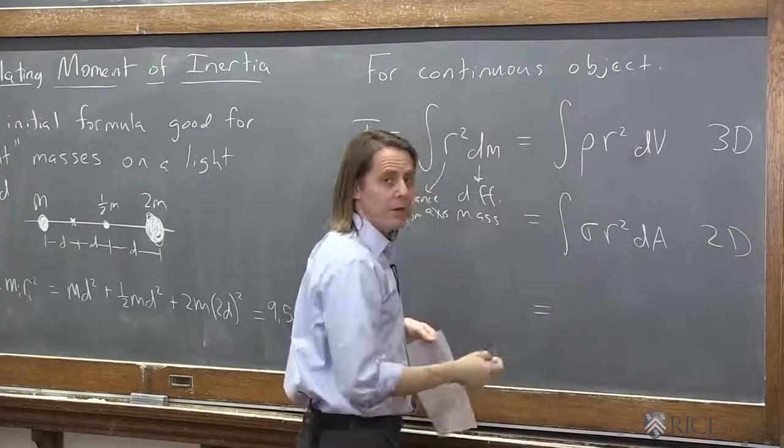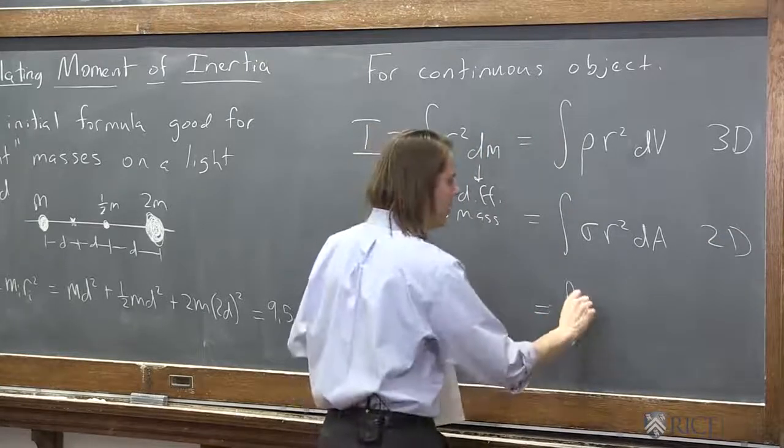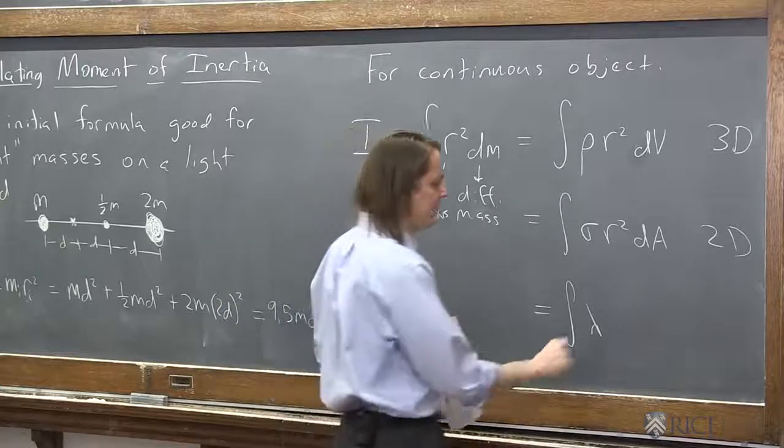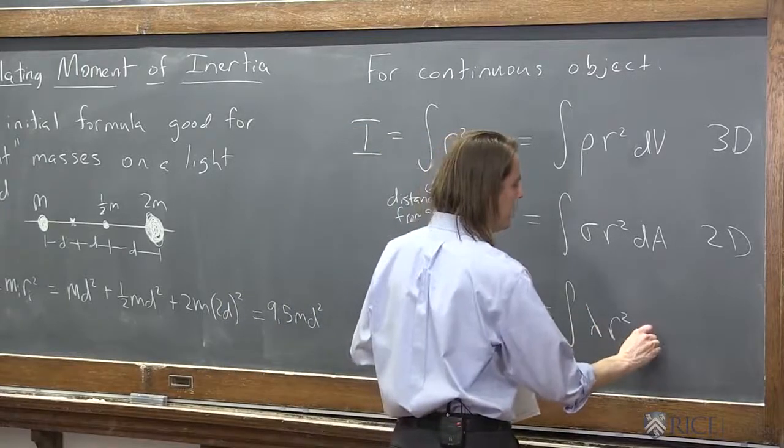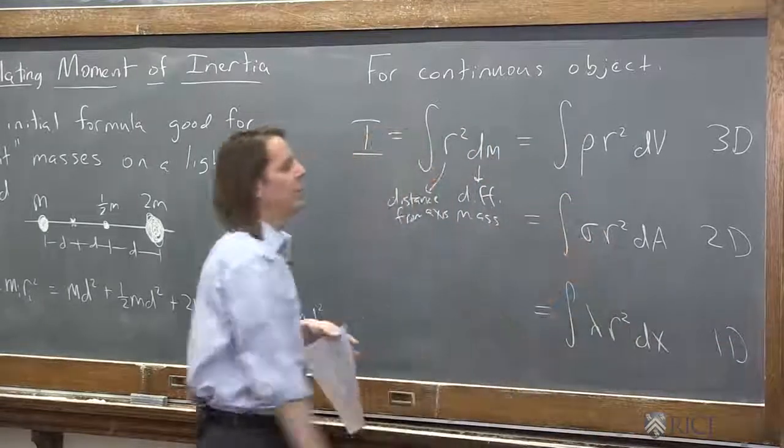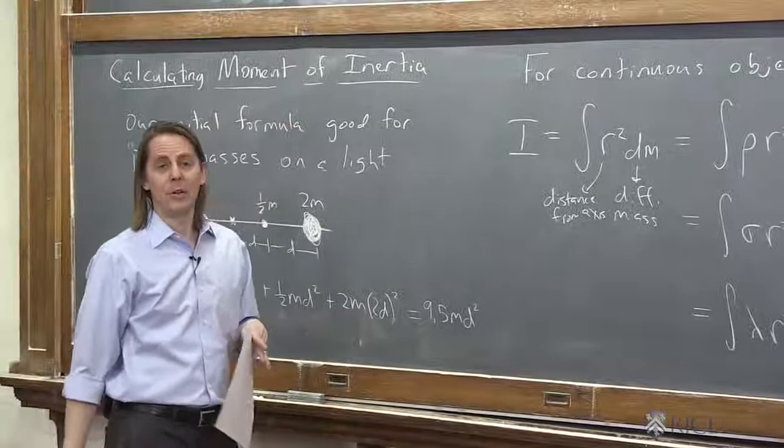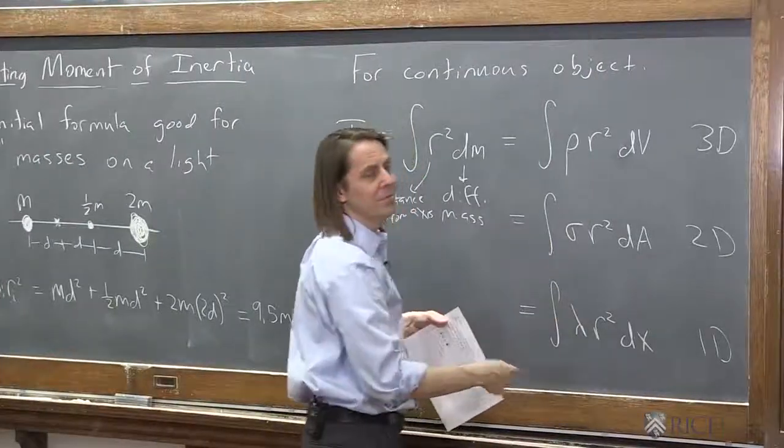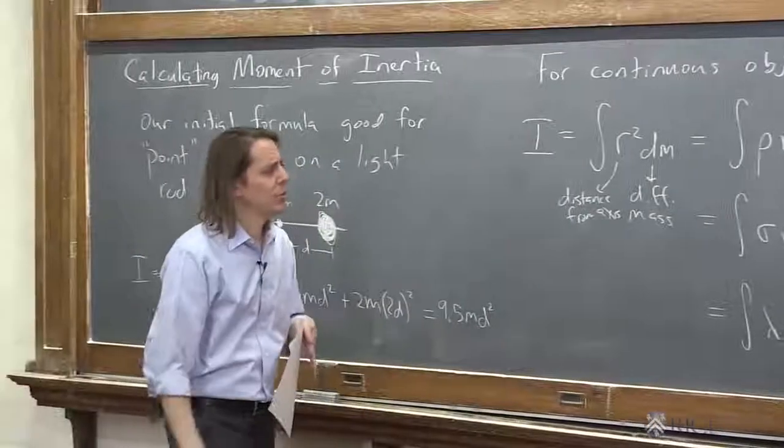Or if you had a 1D rod, you could say the integral, and usually we call it lambda, the mass per unit length, the linear mass density, again, r squared. In this case, dx, 1D. And in each one of these, what r means kind of varies. It's not necessarily the r of the coordinate system you're using. You just got to kind of set it up and see. So we're going to do examples.